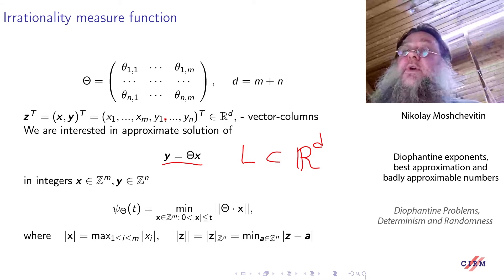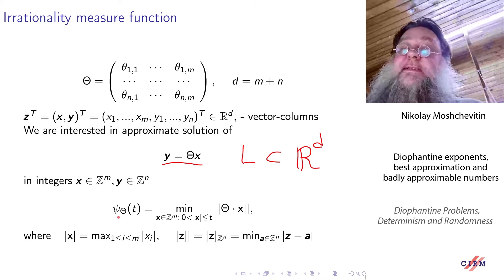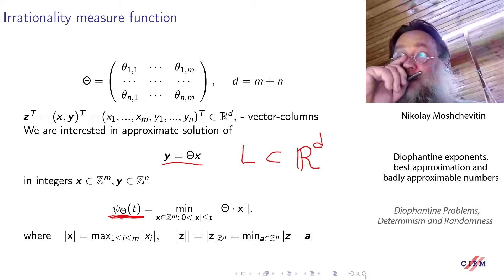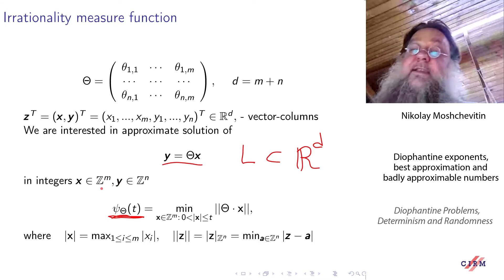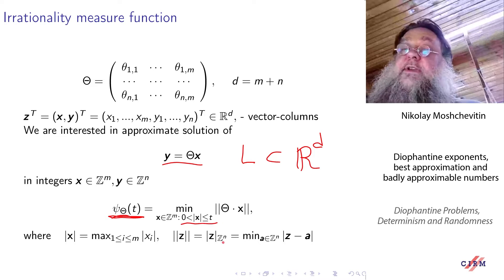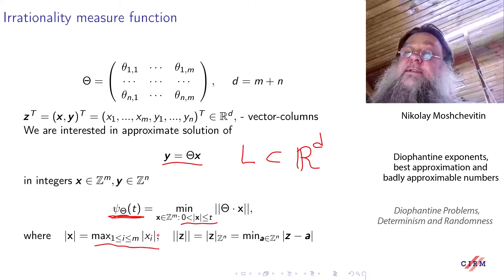To look for these close integer points, it is reasonable to consider the irrationality measure function. Here I introduce it on my slide. So what does this function do? We look for the set of integers in a box. Here, the modulus stands for sup-norm. Of course, we can consider different norms.